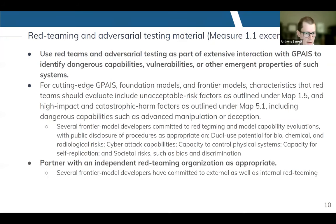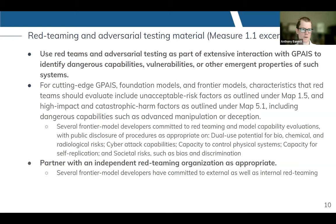On the next couple of slides, I have some examples of guidance — I'm just going to touch on these very briefly. You have access to the full guidance document right now. For Measure 1.1, I mentioned red team procedures. Part of our guidance there is to use red teams and adversarial testing to identify dangerous capabilities, vulnerabilities, or other emergent properties. One aspect of our guidance here is to not only have that done by internal teams, but also by external teams — to partner with an independent red teaming organization as appropriate.